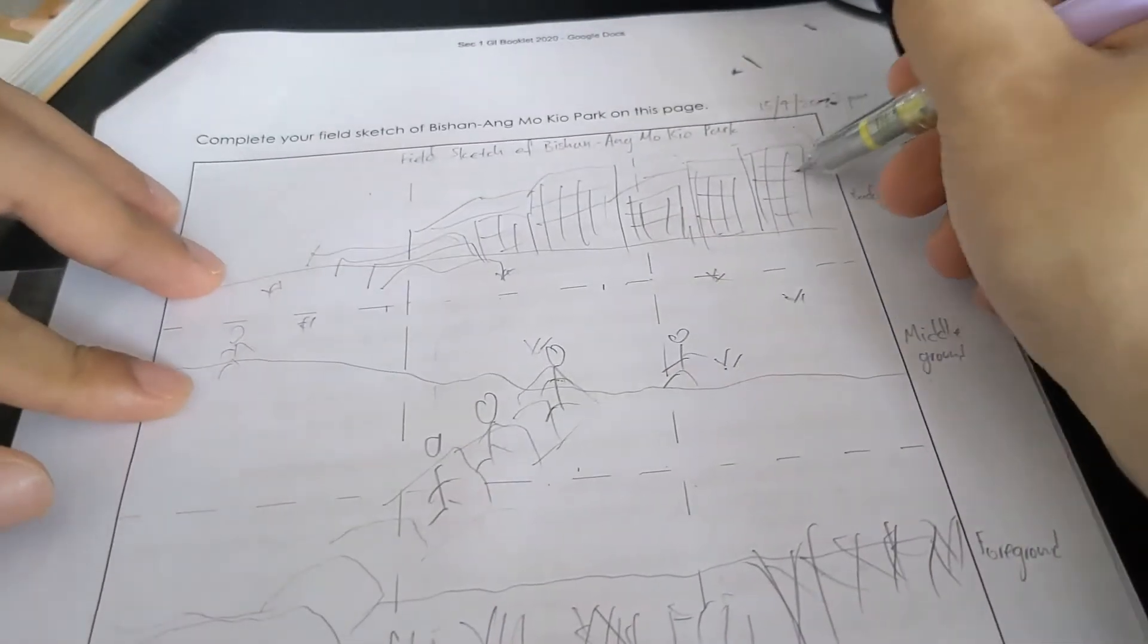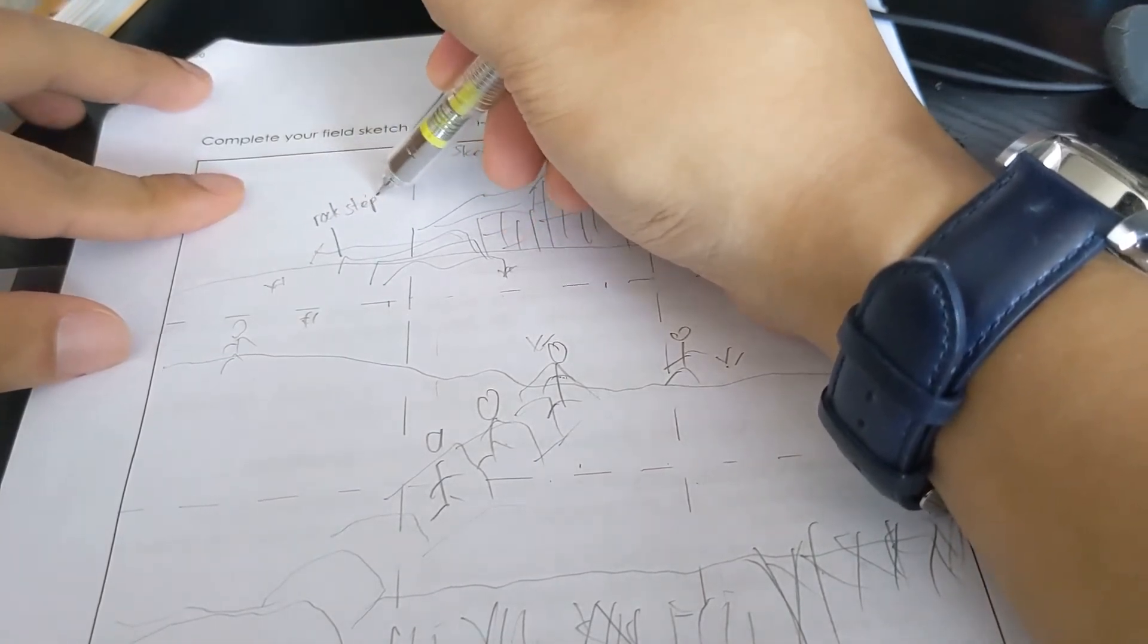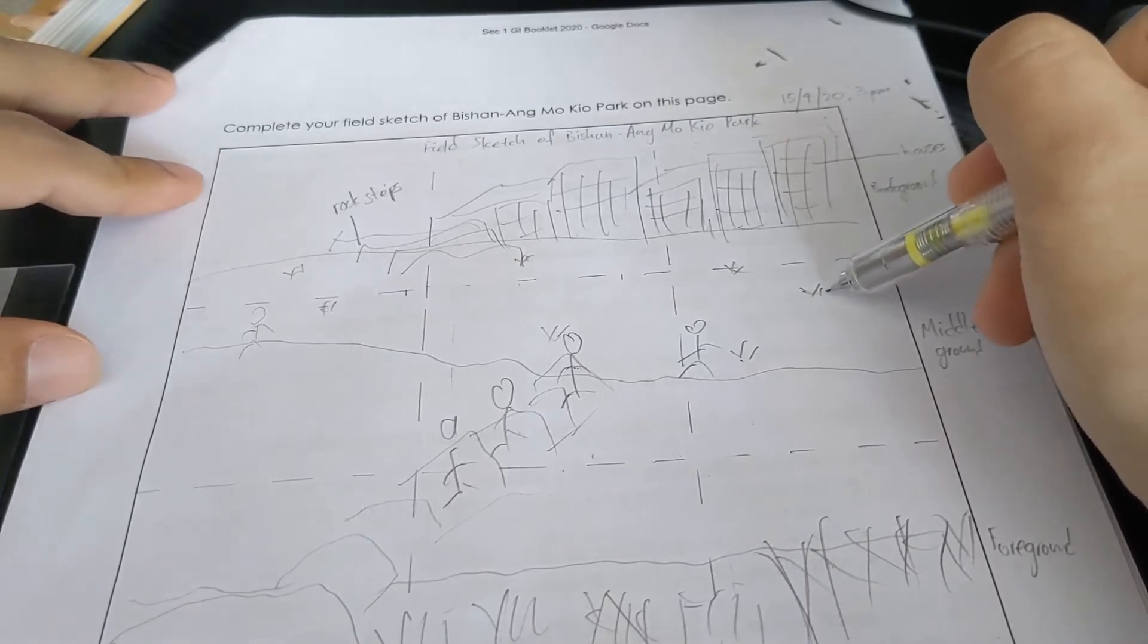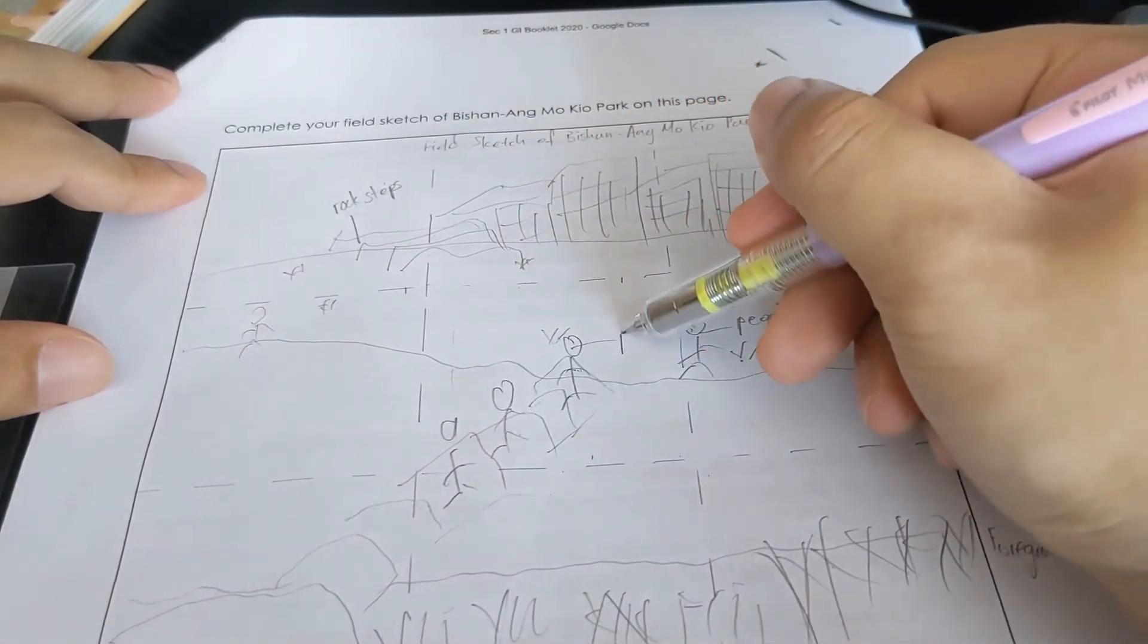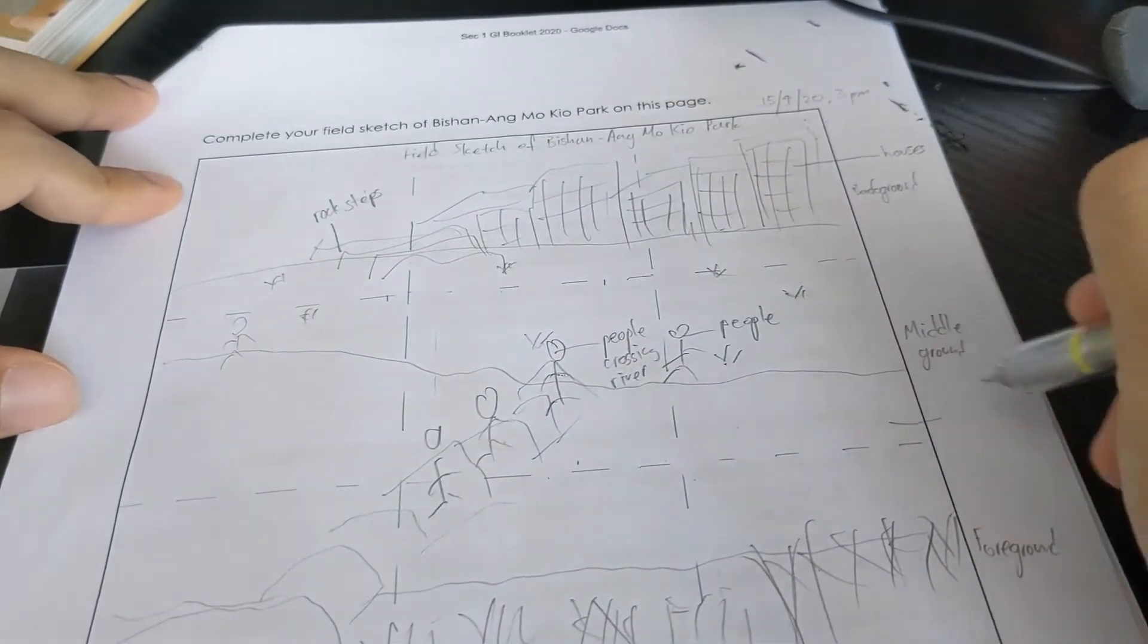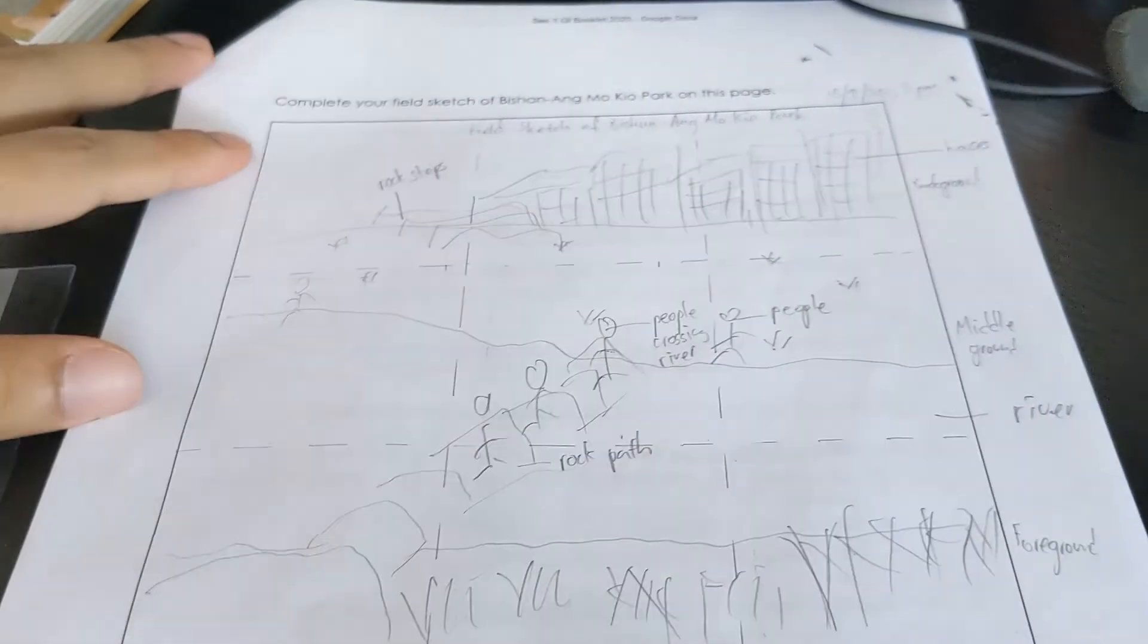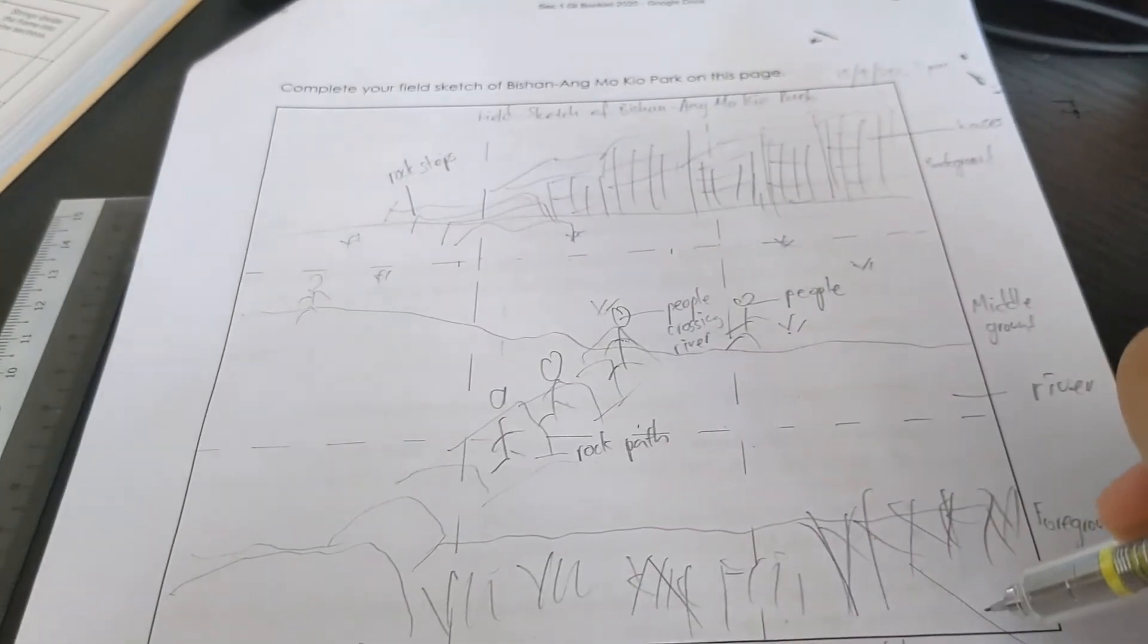So for all these I can put houses. Then this one I can write is a rock steps. So all these are grass and plants. And I got some people, and some people crossing the bridge. This is my river. And then rock path. And finally, I have more plants over here, larger plants.